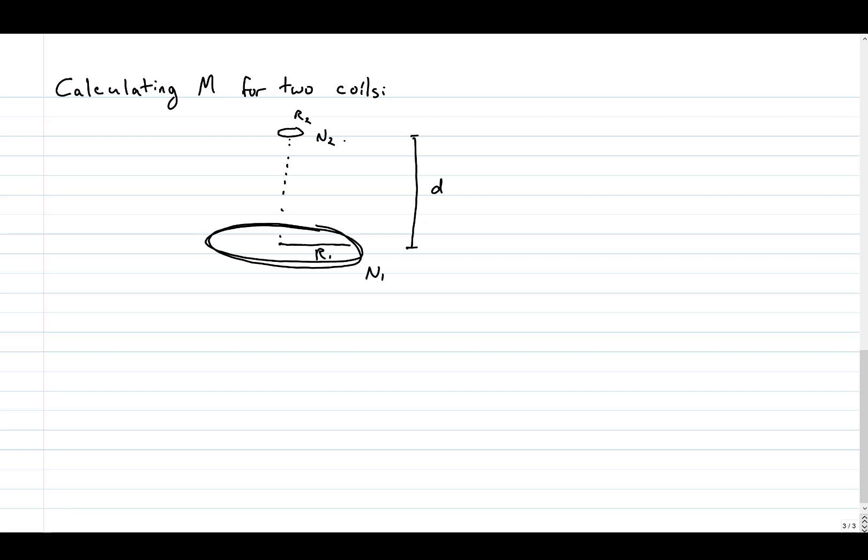To find the mutual inductance of this system, we're going to put some current I through coil 1, and see how much flux we get through coil 2. Then we'll divide the flux by the current to get M.